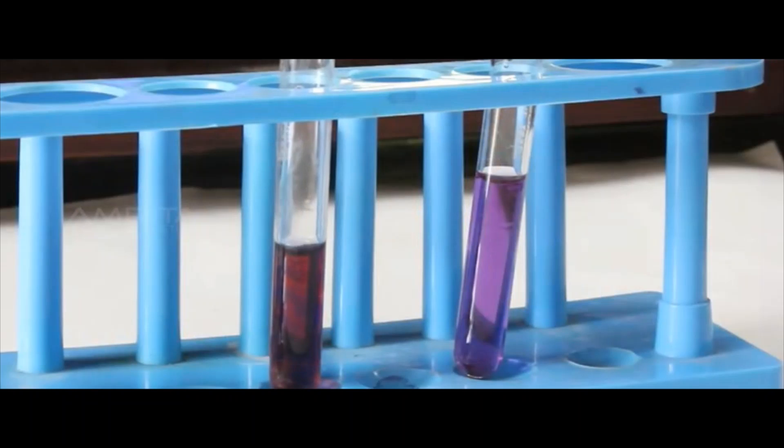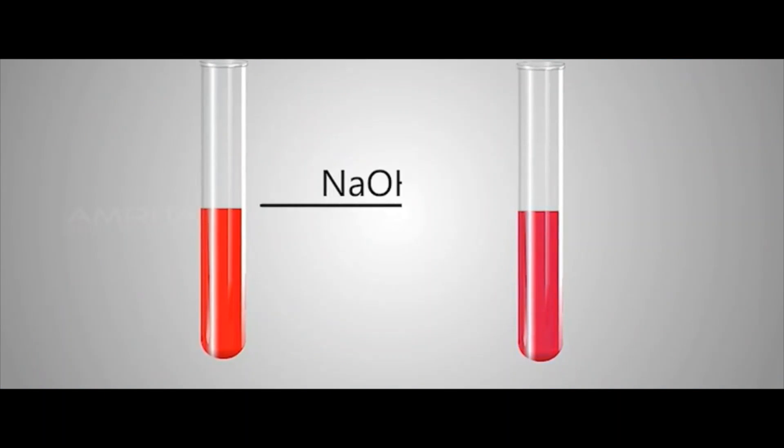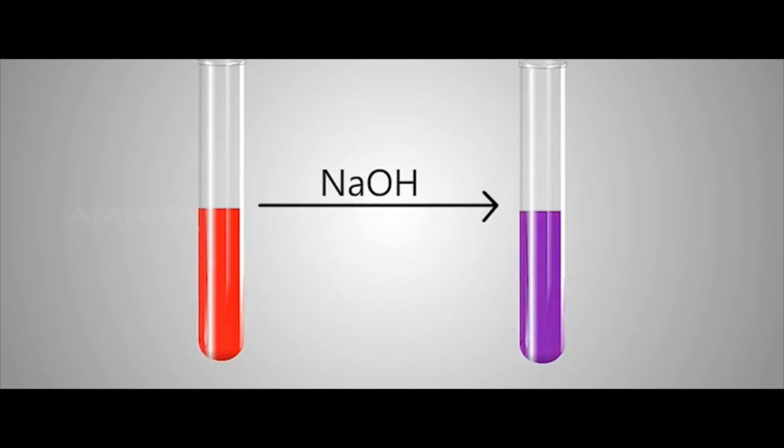You can see that red litmus solution changes to blue, which indicates that NaOH is an alkali having pH more than 7.